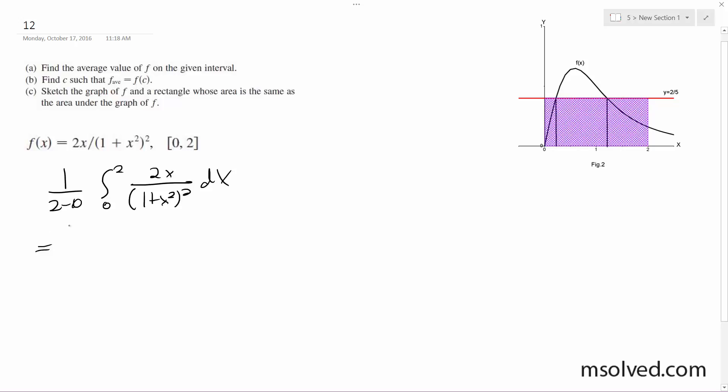What we get next is 1 half, integral from 0 to 2 of 2x over 1 plus x squared squared dx. I'm going to use some substitution here.